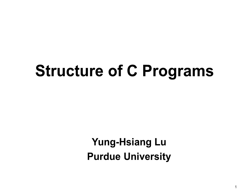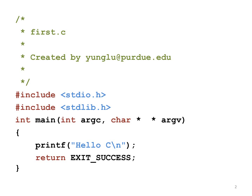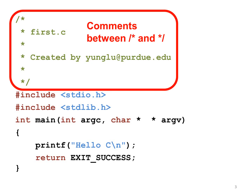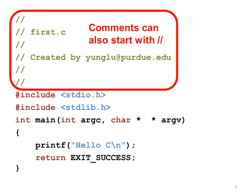Let's start by looking at our first program. On the top, there is a comment. A comment is a description about the program. A comment starts with a slash followed by an asterisk, and ends with an asterisk followed by a slash. You can also start a line comment by using slash slash.